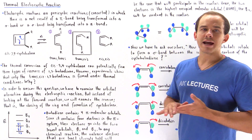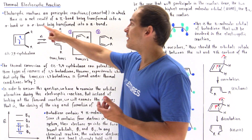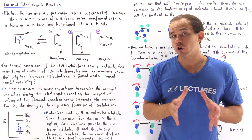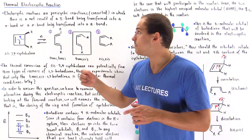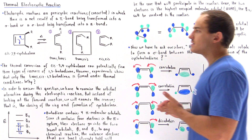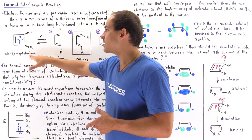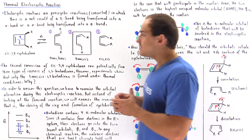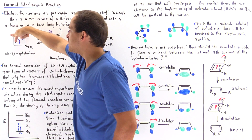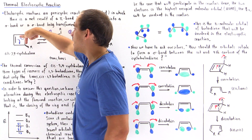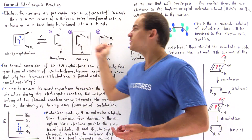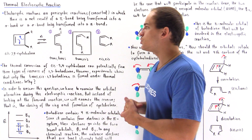What exactly is an electrocyclic reaction? Electrocyclic reactions are pericyclic reactions in which there is a net result of a pi bond being transformed into a sigma bond, or the reverse — a sigma bond being transformed into a pi bond. The electrocyclic reaction we're focusing on is the transformation of cis-3,4-cyclobutene into a butadiene molecule: this sigma bond breaks and forms a pi bond between carbons, while the existing pi bond goes on to form another pi bond. The net result in the forward direction is transformation of a sigma bond into a pi bond.